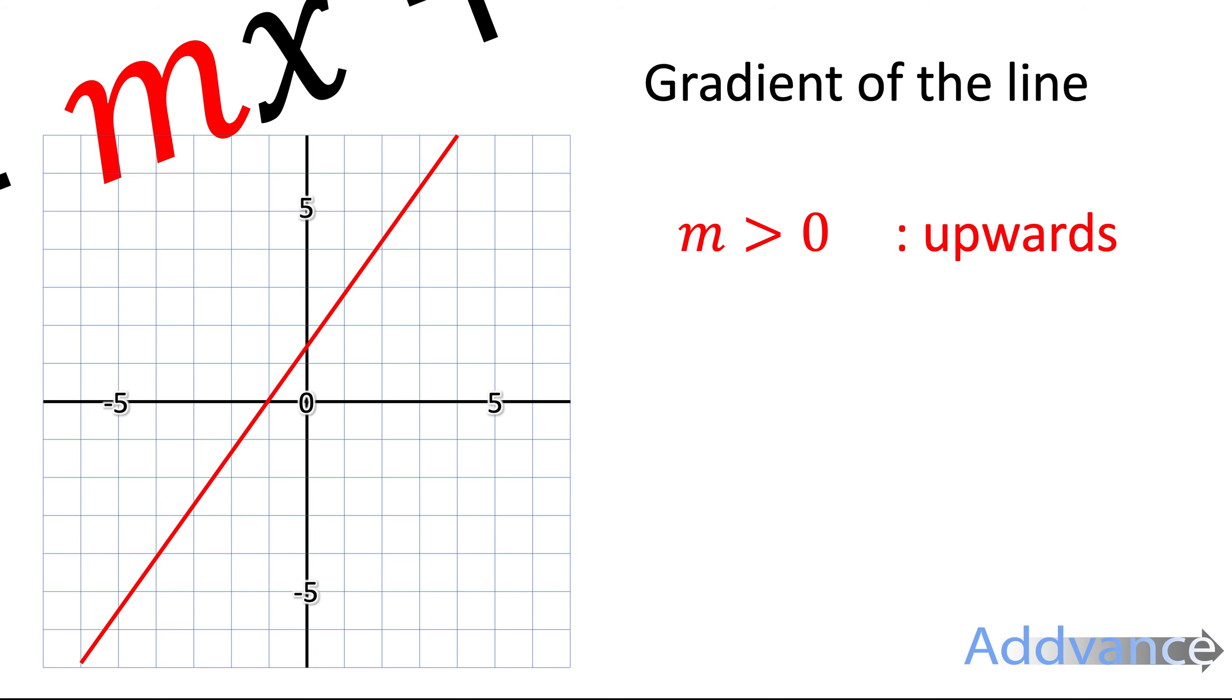So what we know is that if m is more than 0, it's going upwards. If m is equal to 0, then it's flat, and if m is less than 0, if it's negative, then it's going downwards.